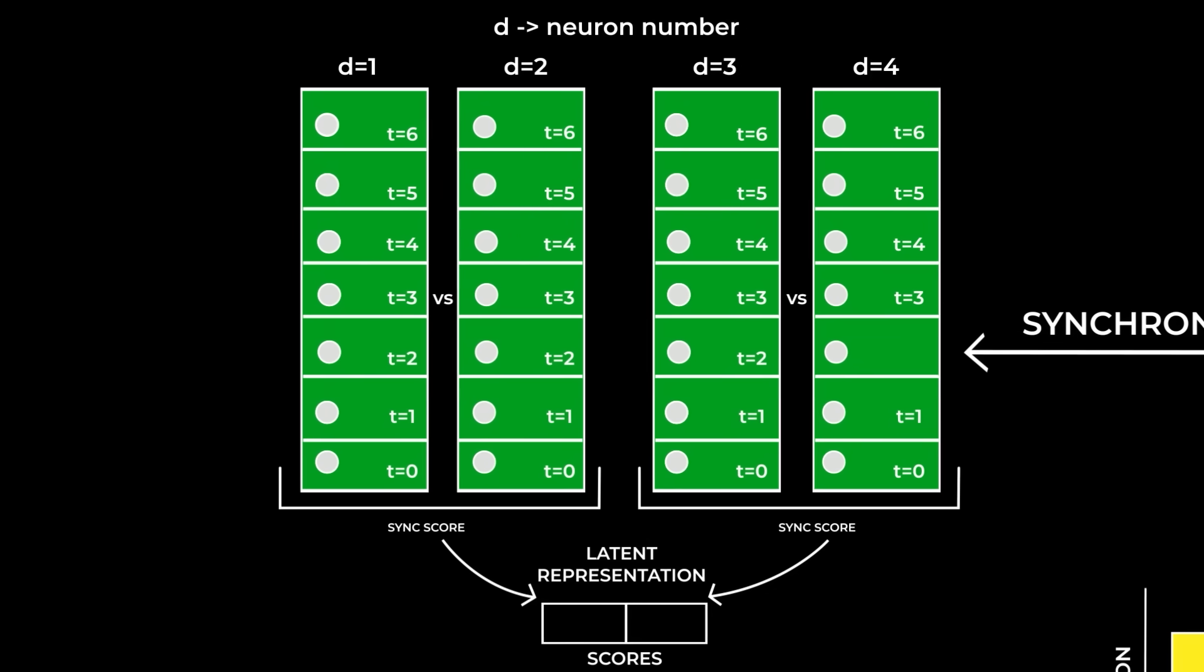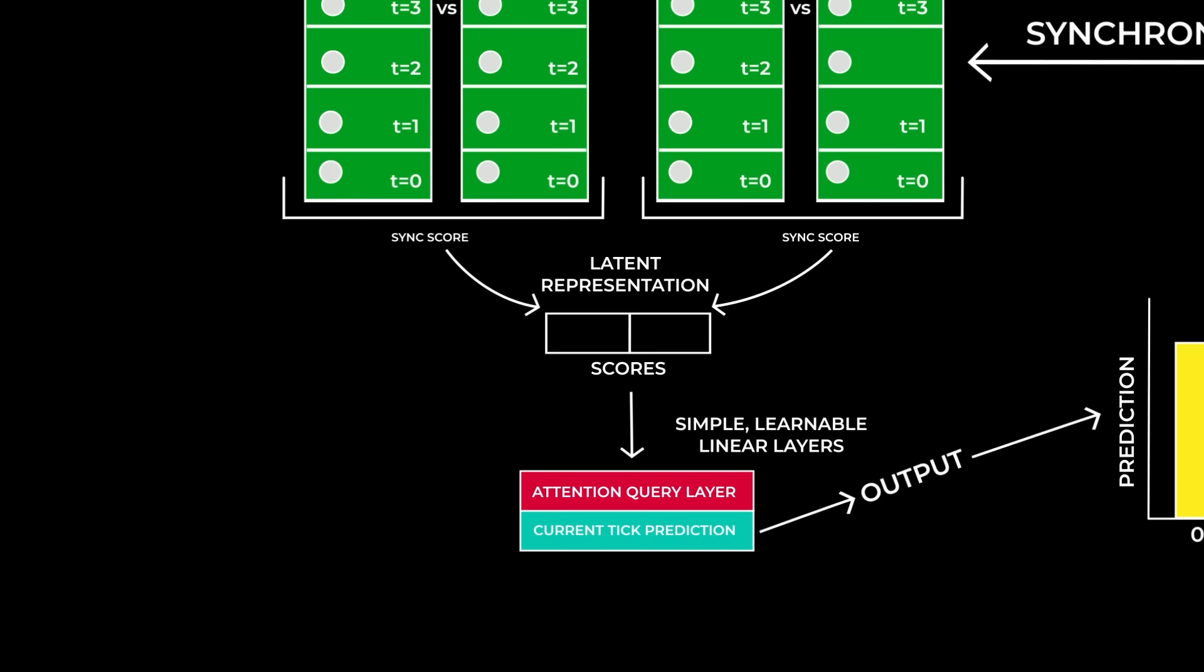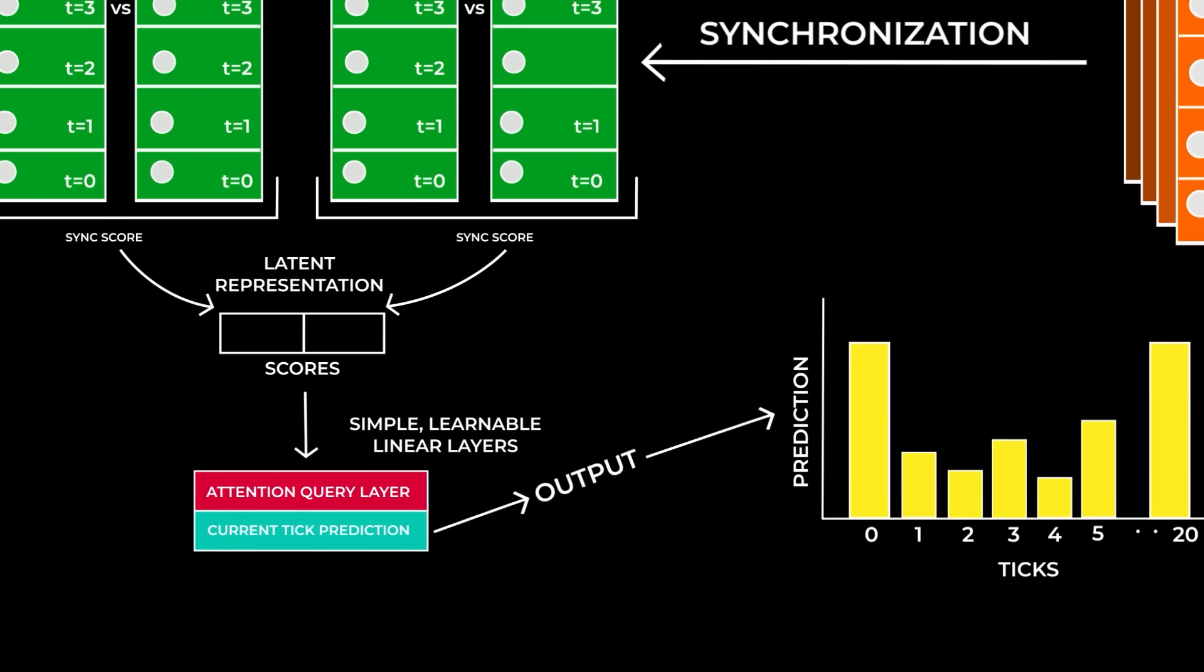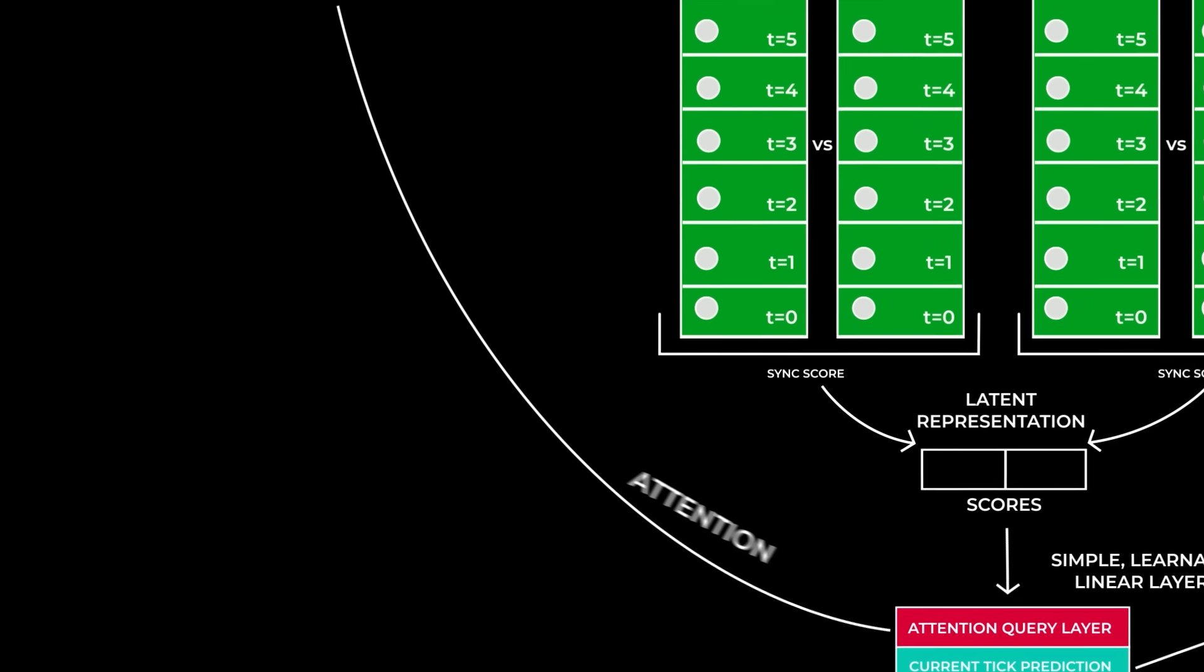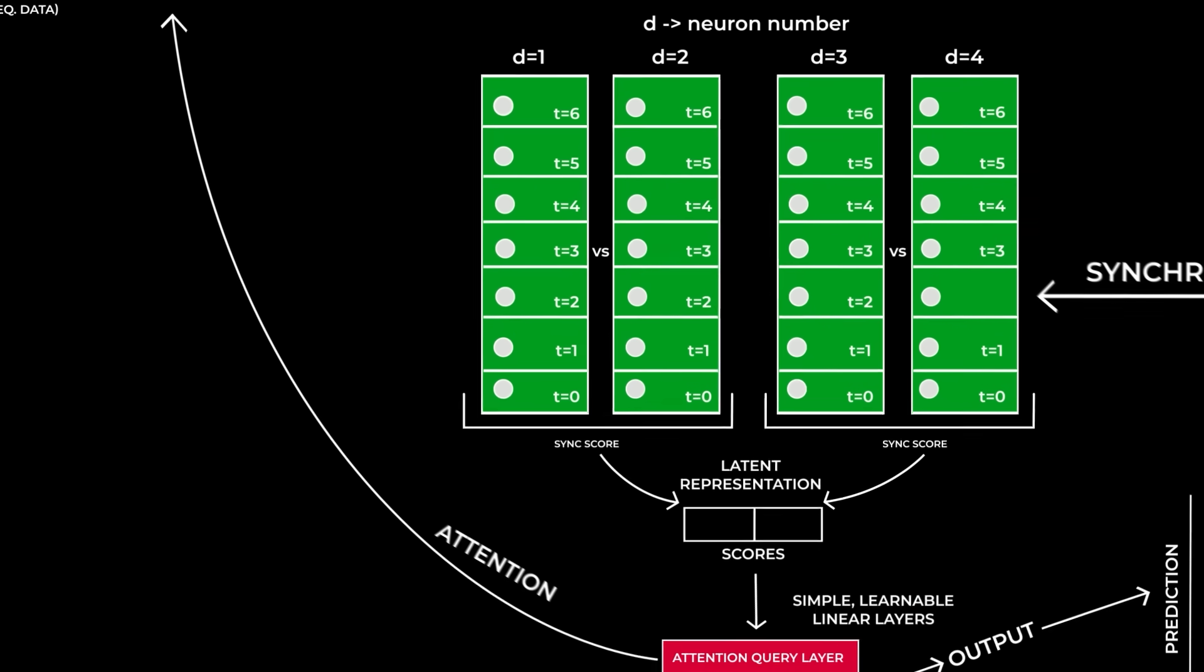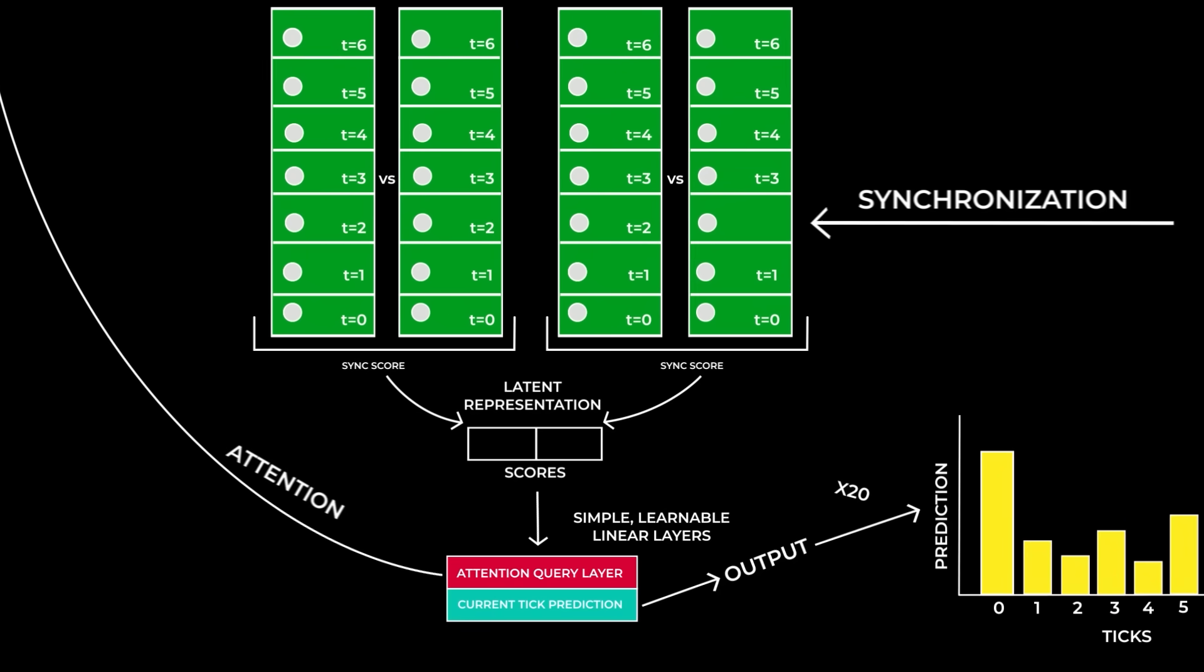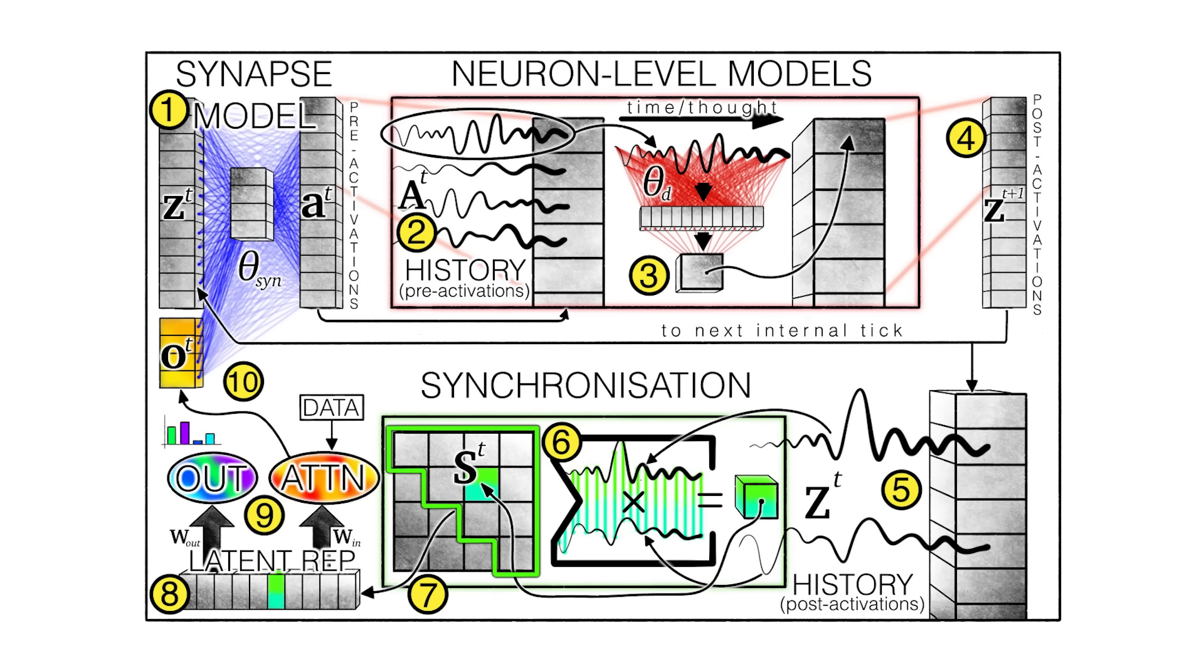Then, when this latent representation is made, this vector of teamwork scores is fed into simple, learnable linear layers that have been trained to recognize specific patterns within these scores, and one of these layers uses the patterns to generate CTM's actual output or prediction for the current tick, while another layer uses different patterns from a similar latent representation to create an attention query, which is cross-attention with the input data again then sent to the next operation in the next tick. So when you run a CTM, you would define how many thought steps or ticks it goes for. And let's say you set it to 20 ticks, then you would get one output every tick. These 20 outputs at the end are then used to determine a single robust final prediction by looking across the entire thought processes. And yeah, that is the rough CTM model logic.